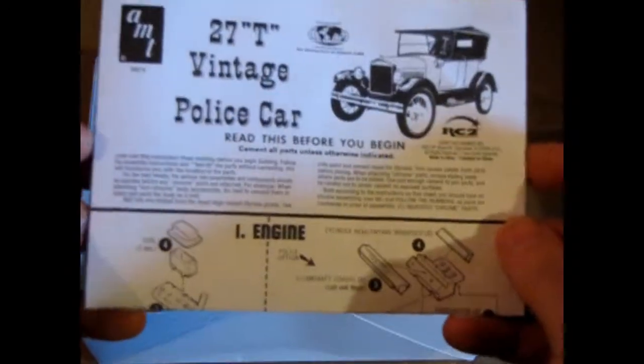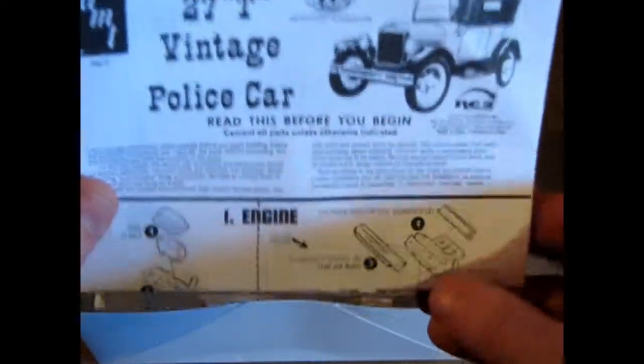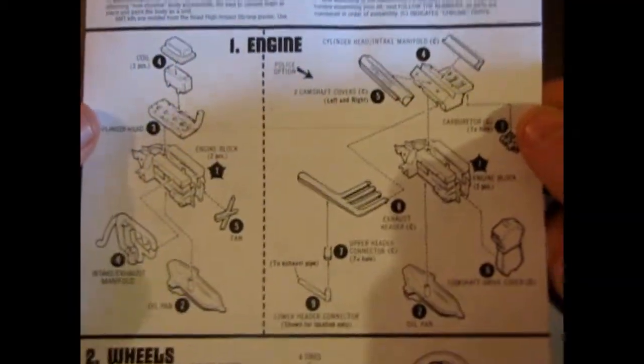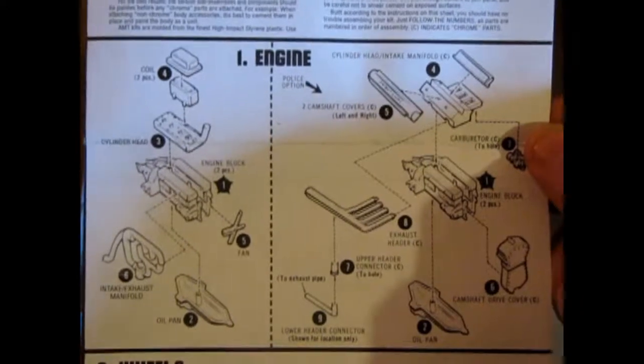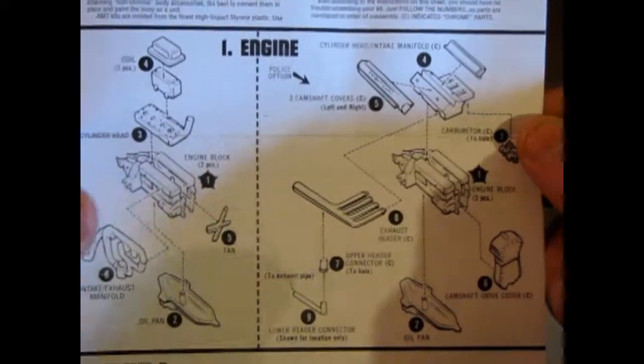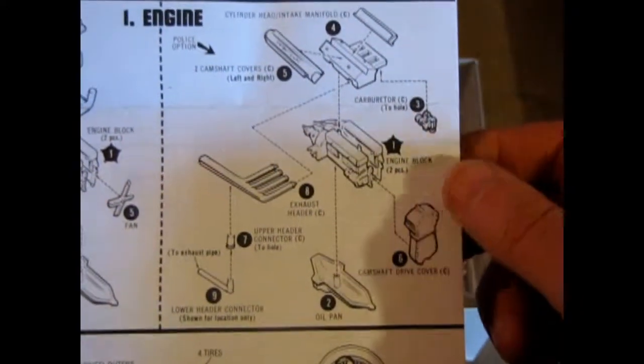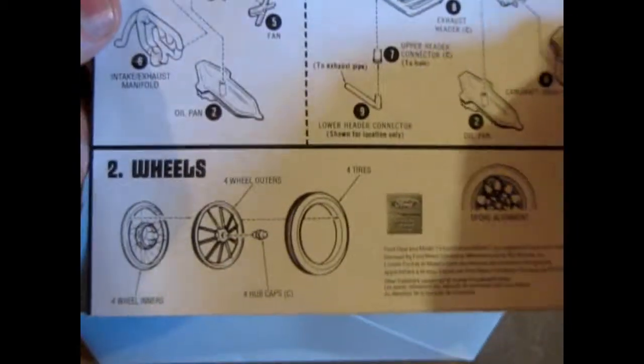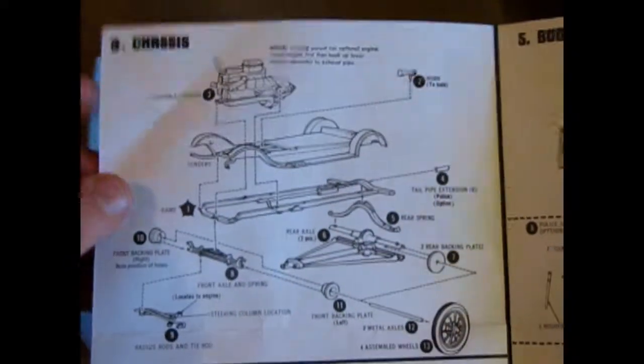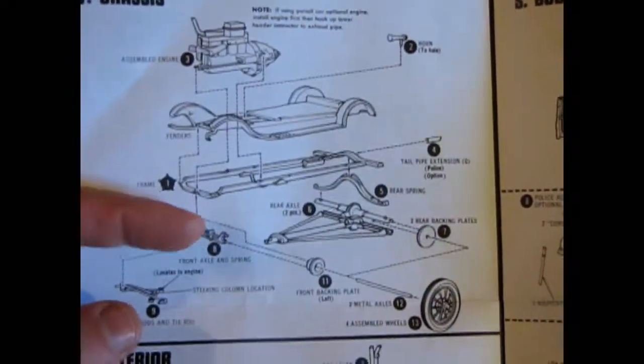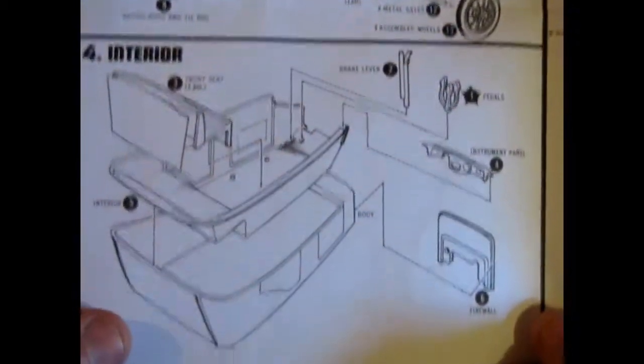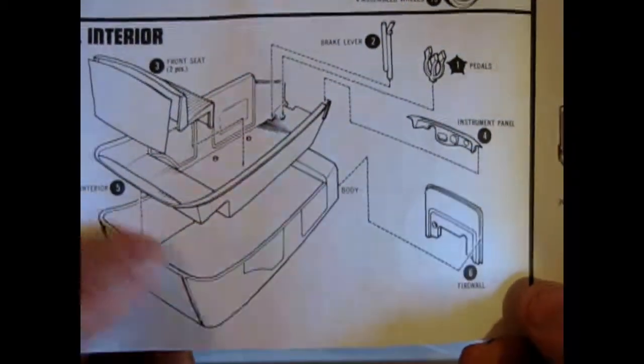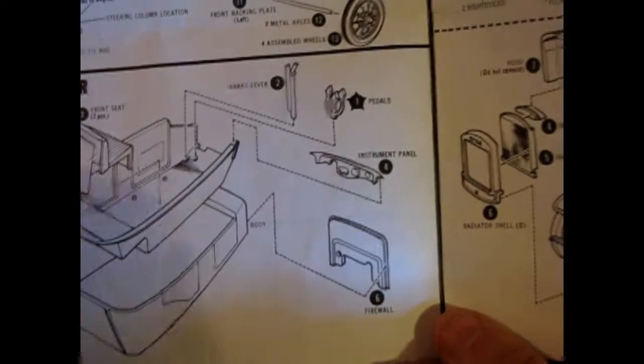Now here's the instructions from the vintage police car kit. And they give you the options for the stock Model T or the Frontiac version. And then they show you the three piece wire wheels. There's how it mounts onto the frame and the springs. And there's your touring body with all the bits.